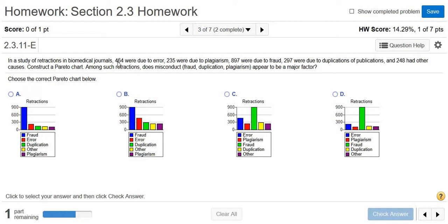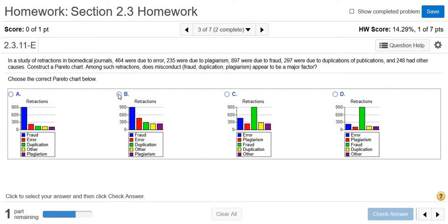Now here error is 464, so that matches up with this one. That looks like roughly 464. It does not match up with this one. Error here is below 300. So it should be choice B.